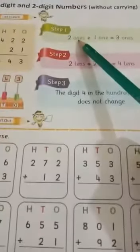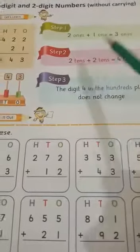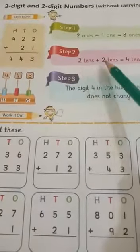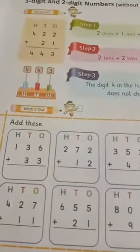Step 1: 2 ones and 1 ones, 3 ones. Thik hai? 2 tens and 2 tens, 4 tens. 4. Okay.